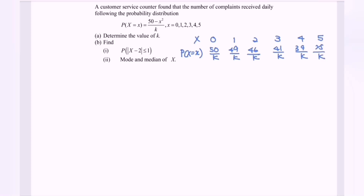Refers to part A: determine the value of K. Using the property that the sum of all probabilities equals 1. With equal denominator K, add the numerators: 50 + 49 + 46 + 41 + 34 + 25 = 245 over K, which equals 1. So K equals 245.